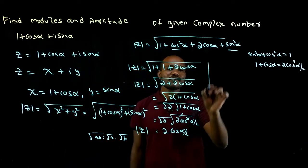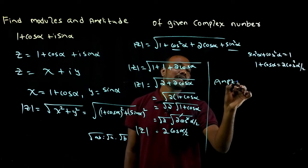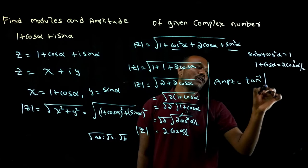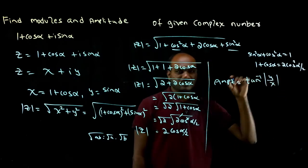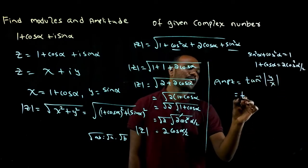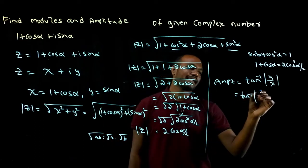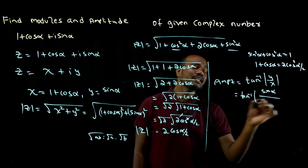Now we have to find amplitude of Z. What is the formula? Tan inverse of Y upon X. So this is tan inverse of Y, which is sine alpha, divided by X.